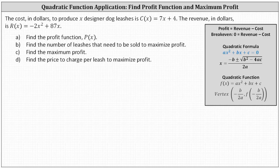We're given the cost in dollars to produce x designer dog leashes is c of x, and the revenue in dollars is r of x. We're asked to find the profit function, find the number of leashes that need to be sold to maximize profit, find the maximum profit, and finally find the price to charge per leash to maximize profit.